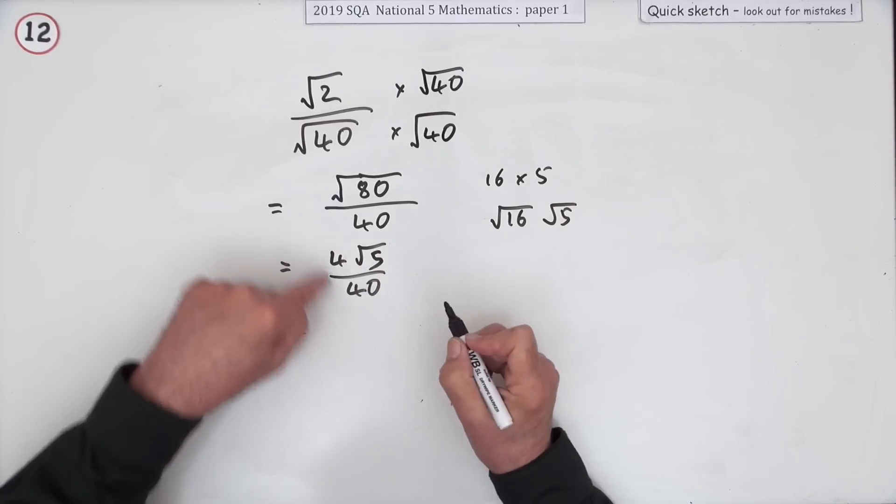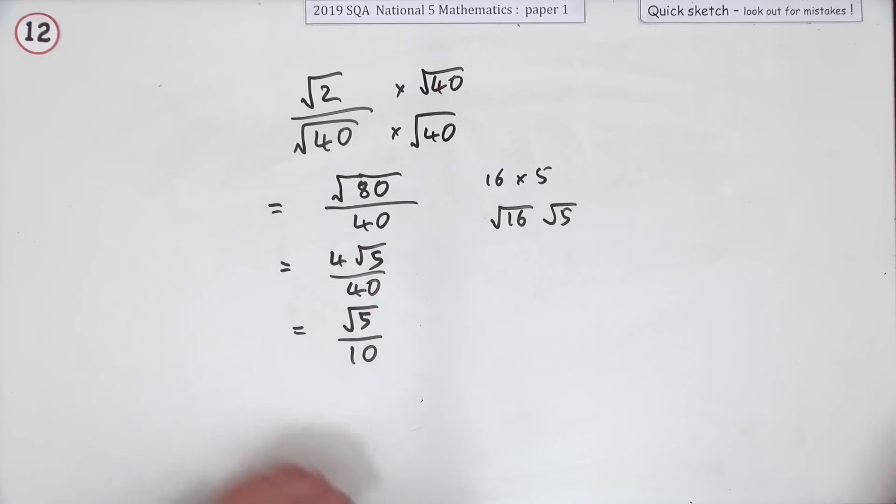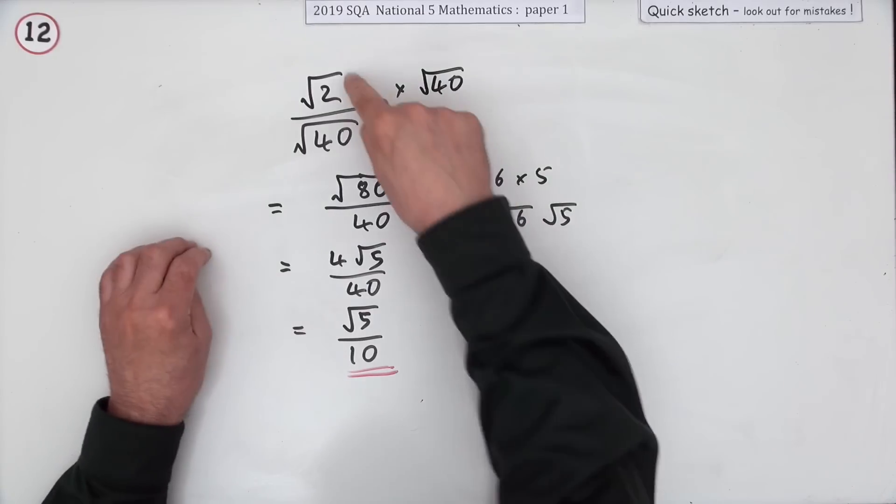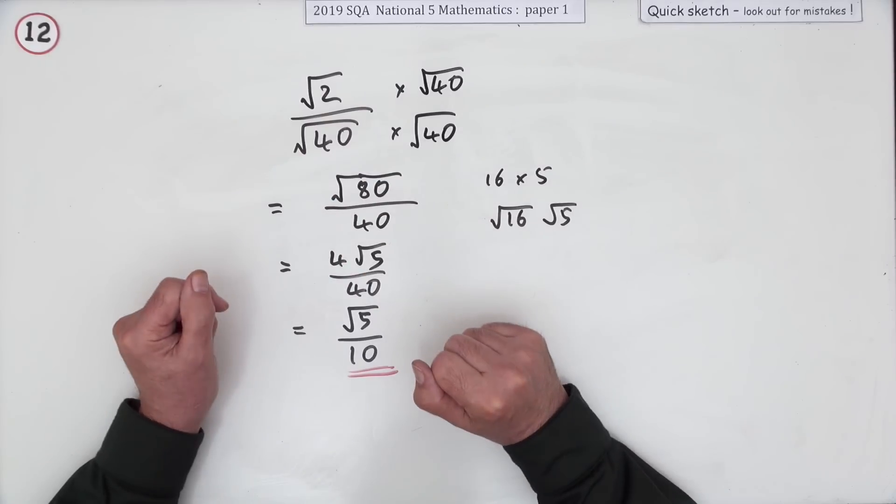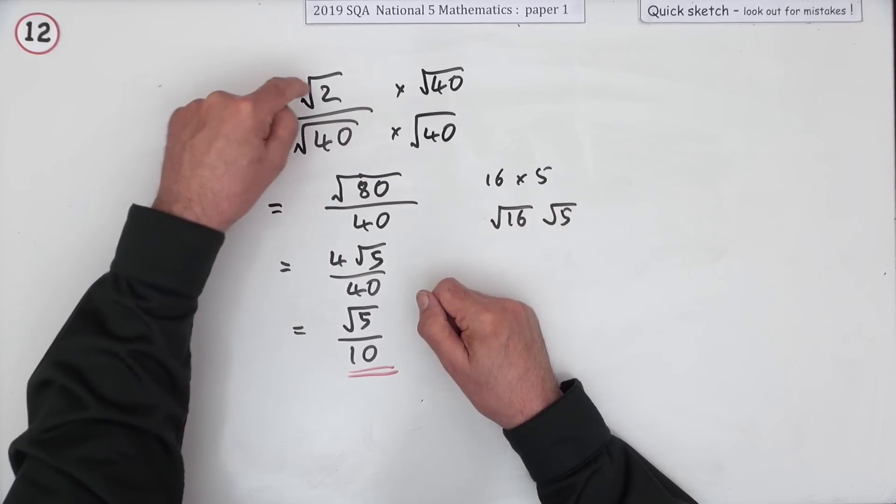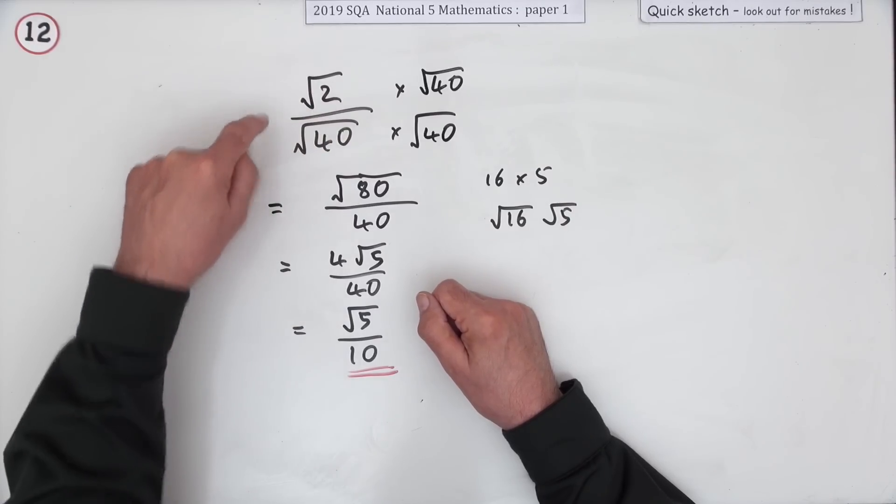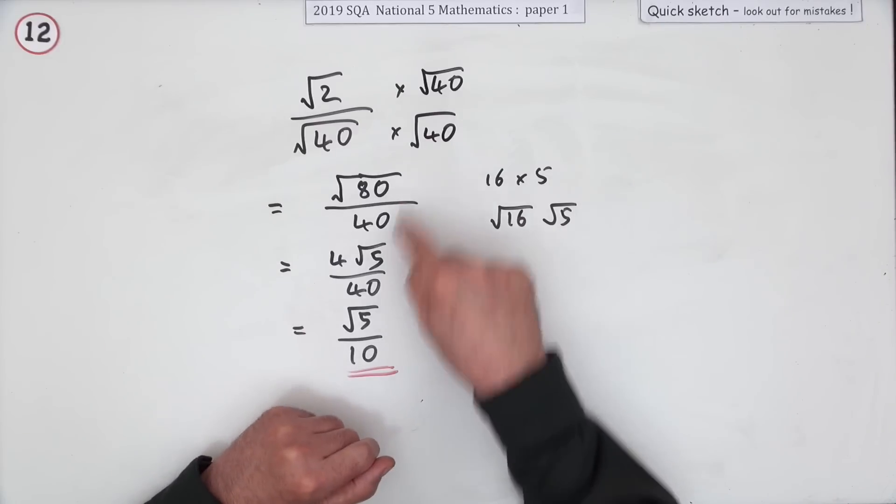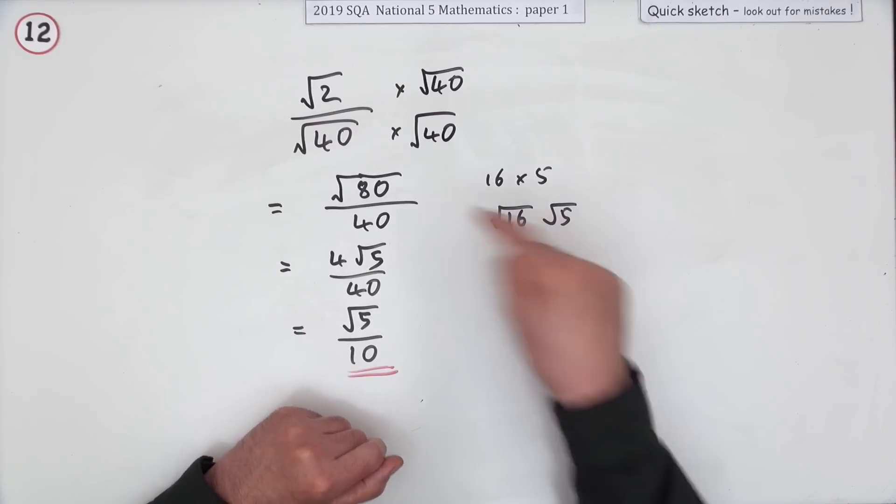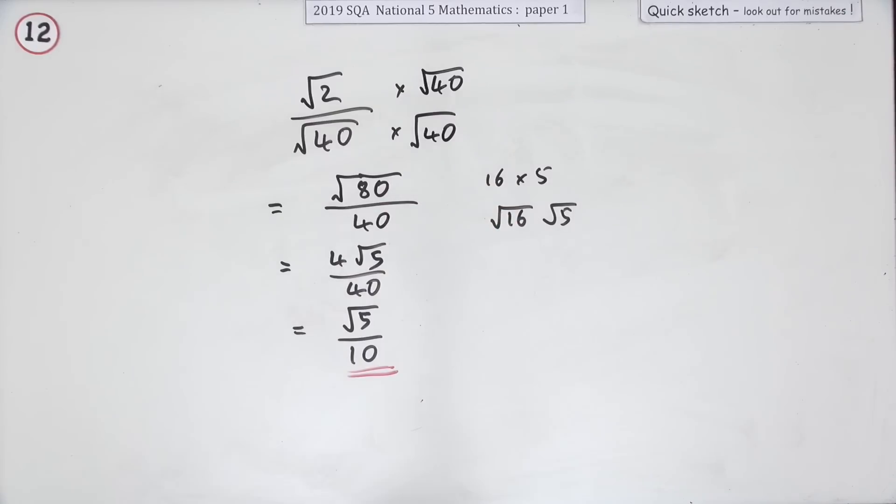And then finally cancel those down so you've got root 5 upon 10. Of course, you could go other ways. You could do that division to begin with and just make that 1 over root 20, so you've done some simplification to begin with. So if you had 1 over root 20, you'd have root 20 over 20, and that would have been easier to find the perfect square lurking inside, which is what's necessary to simplify it.